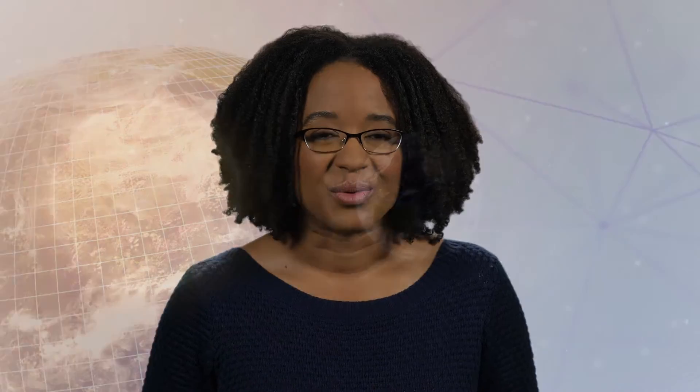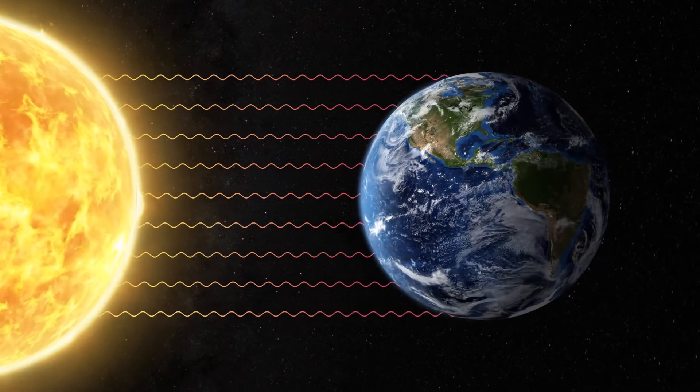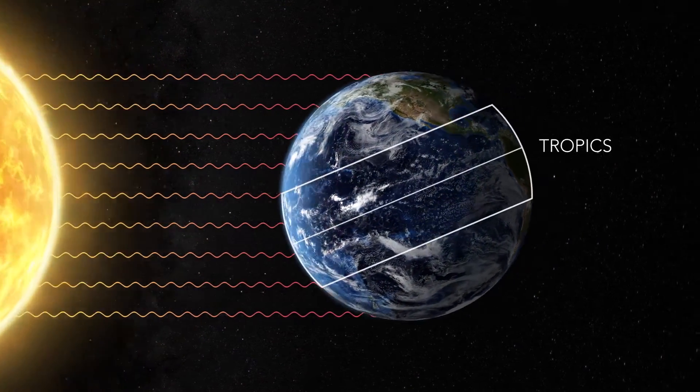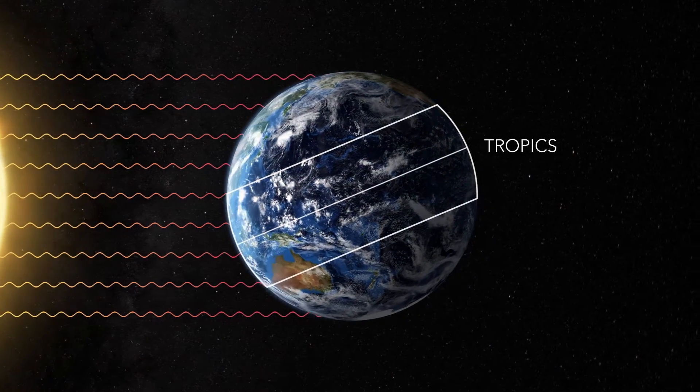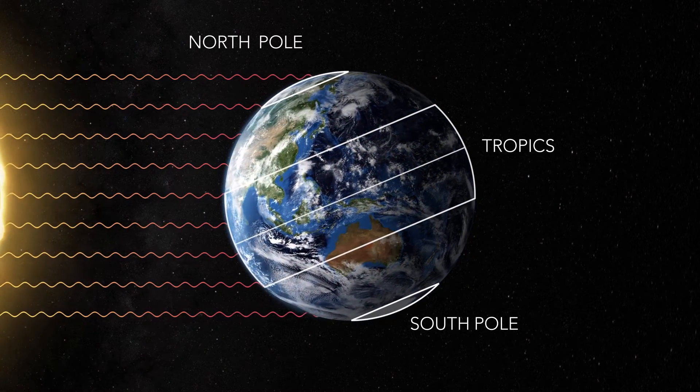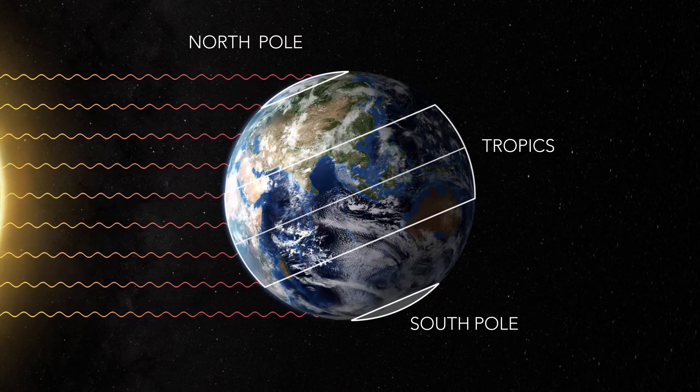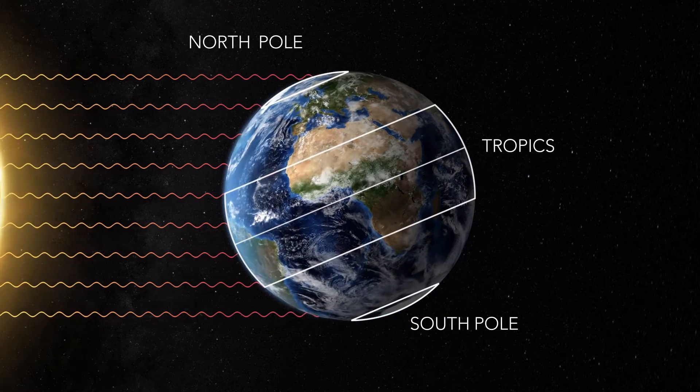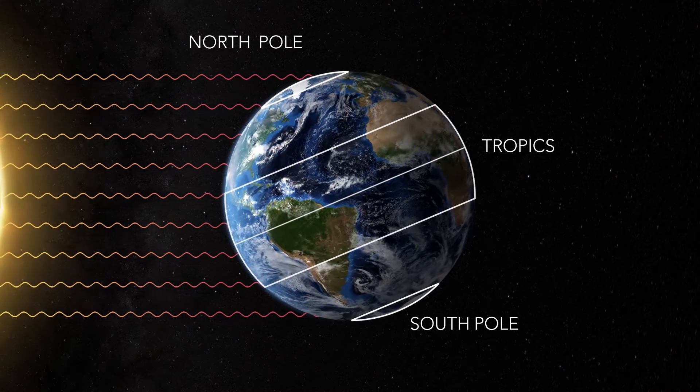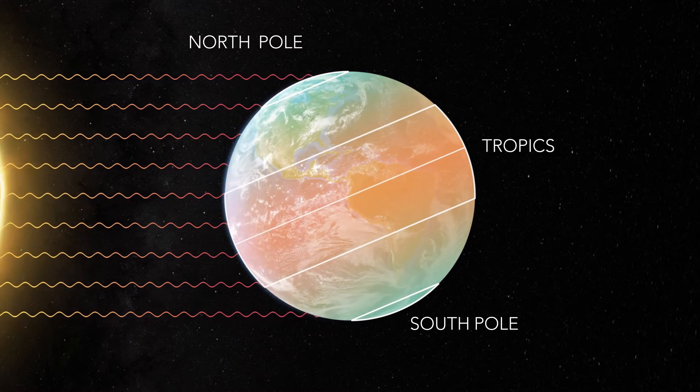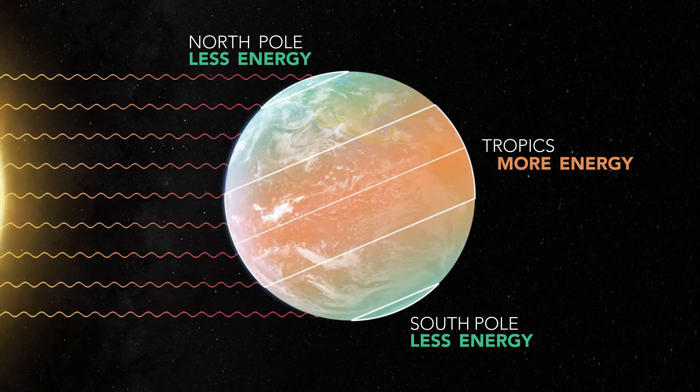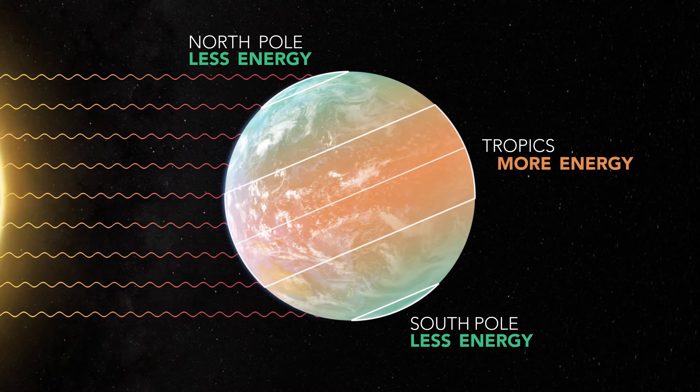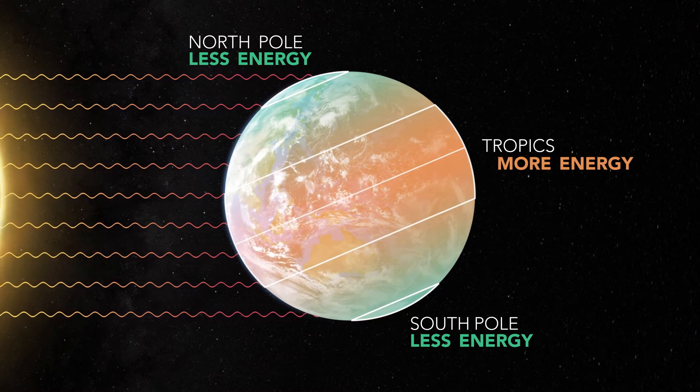So why do the atmosphere and ocean move the way they do? The sun's radiation doesn't hit the Earth evenly. The tropics receive direct energy from the sun year-round, while the poles not only get less direct solar radiation, but also spend part of the year not getting any direct solar radiation at all. This leads to a big imbalance of energy, with the tropical regions of the ocean and atmosphere receiving more energy and thus being warmer and less dense than the poles.